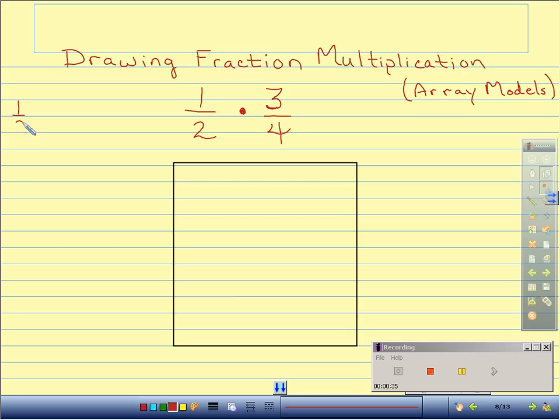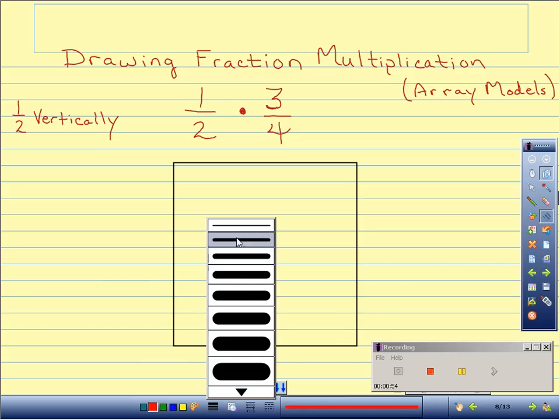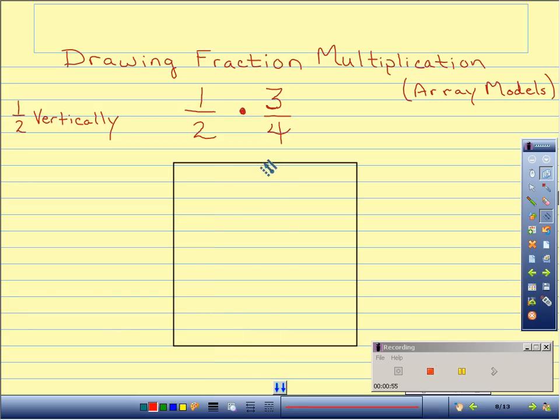So one-half is going to be represented vertically on my box. That means I'm going to divide it into two groups. That's close enough to the middle.